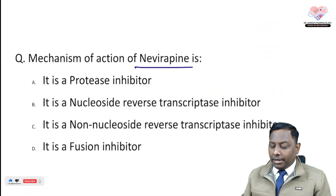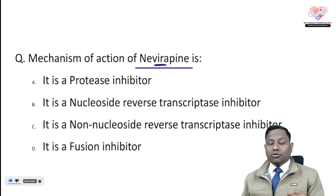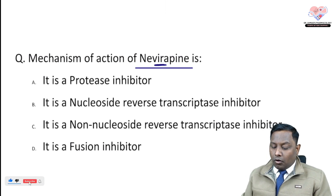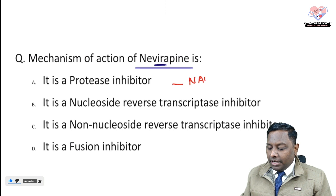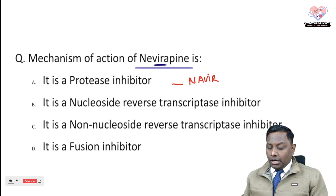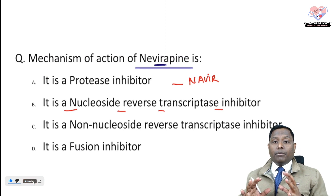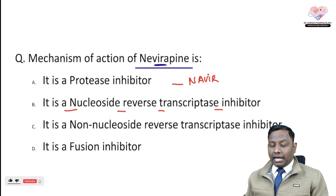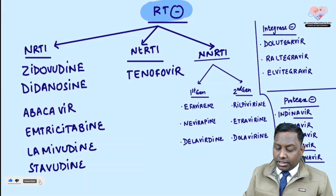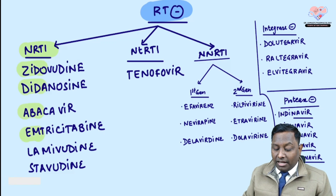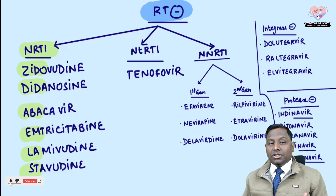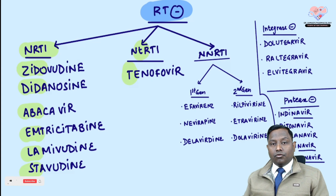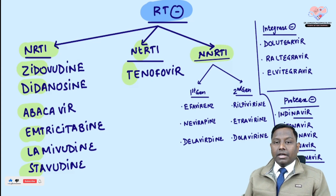Next question: mechanism of action of nevirapine. Remember, in the name nevirapine there is 'virus' hidden inside. All protease inhibitors end with 'navir' — indinavir, nelfinavir, etc. Nucleoside reverse transcriptase inhibitors are an important family. Mnemonic: 'Ziddi Dadi Abu Ammi Love Sister' — zidovudine, didanosine, abacavir, emtricitabine, lamivudine. For nucleotides, there is only one: tenofovir.